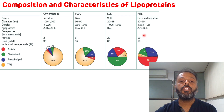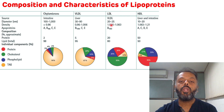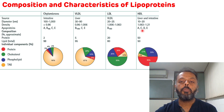Regarding the apolipoproteins present in each lipoprotein: chylomicron contains apolipoprotein A, B48, C, and E; while VLDL contains apolipoprotein B100, C, and E. The major apolipoprotein in LDL is apolipoprotein B100, while the apolipoproteins present in HDL are apolipoprotein A, C, B, and E.